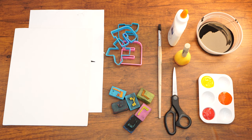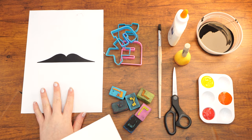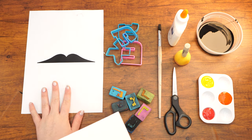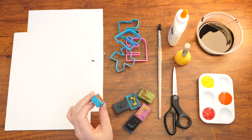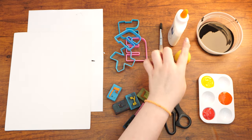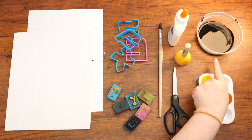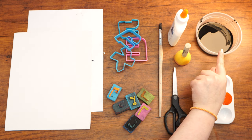Here are the supplies that we will need: a canvas, the printed template of an open book, Aleph-bet cookie cutters, Aleph-bet stamps, a paintbrush, scissors, a sponge, liquid glue, and black, yellow, orange, and red paint.